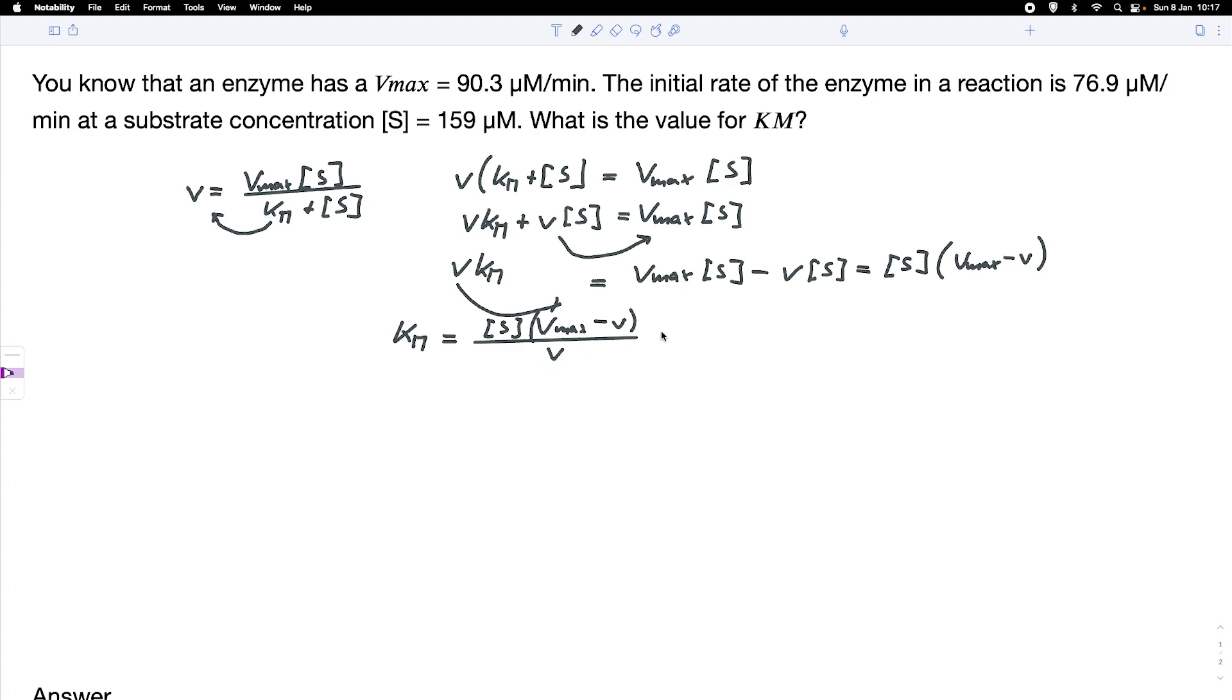And we can now just simply put in some numbers. So for the substrate concentration, we had 159 micromolar, we'll deal with the units in a minute, 159 micromolar times the Vmax. That's 90.3 minus 76.9 divided by 76.9.